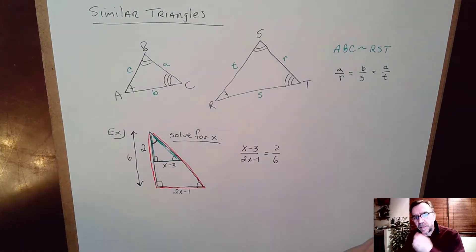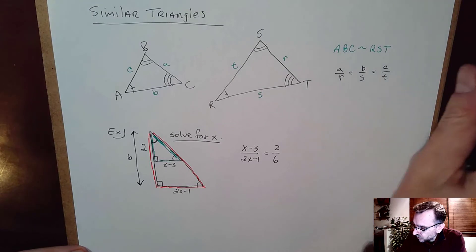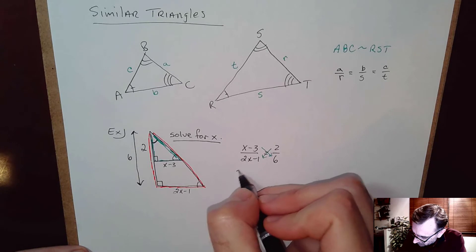Alright and so those sides are in proportion like that. And that's going to be our setup. Once we're there we can just simply cross multiply, do the algebra and solve for x.